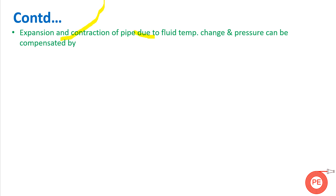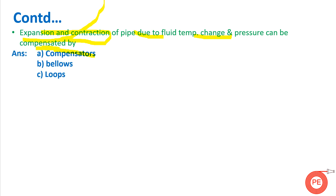The next question is: how can expansion and contraction of pipe due to fluid temperature change and pressure be compensated? It can be compensated by the use of compensators, bellows, and loops. During pipe stress analysis, these are proposed wherever there is a variation in pipe temperature due to heating or cooling, so that expansion and contraction can be minimized.